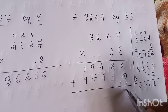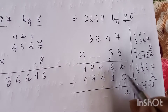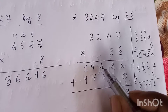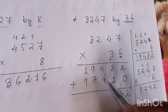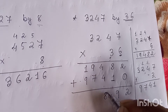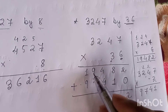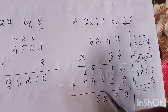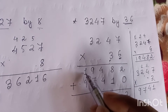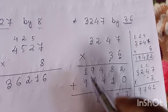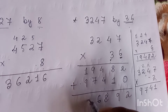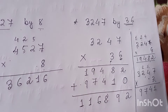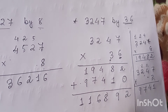Two plus zero is two. Eight plus one is nine. Four plus four is eight. Nine plus seven is sixteen — write six, carry one. That gives us one more, so eleven. This is the final answer.